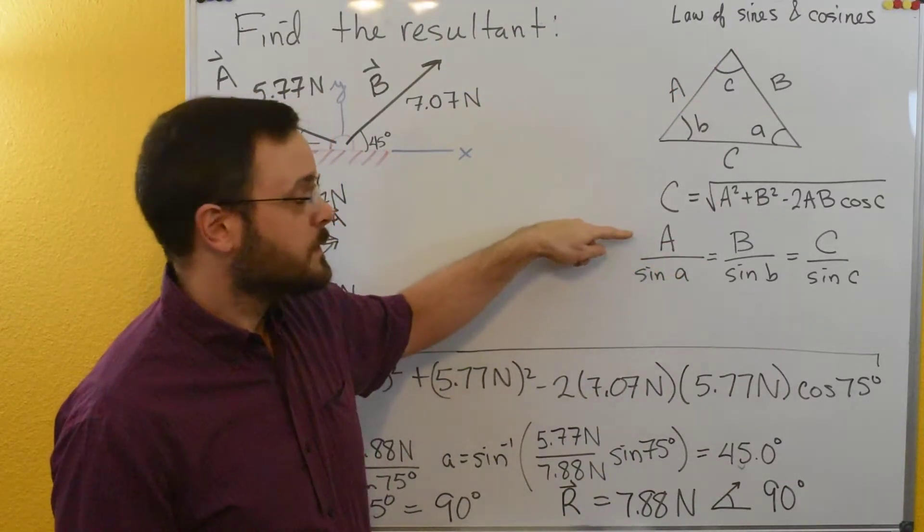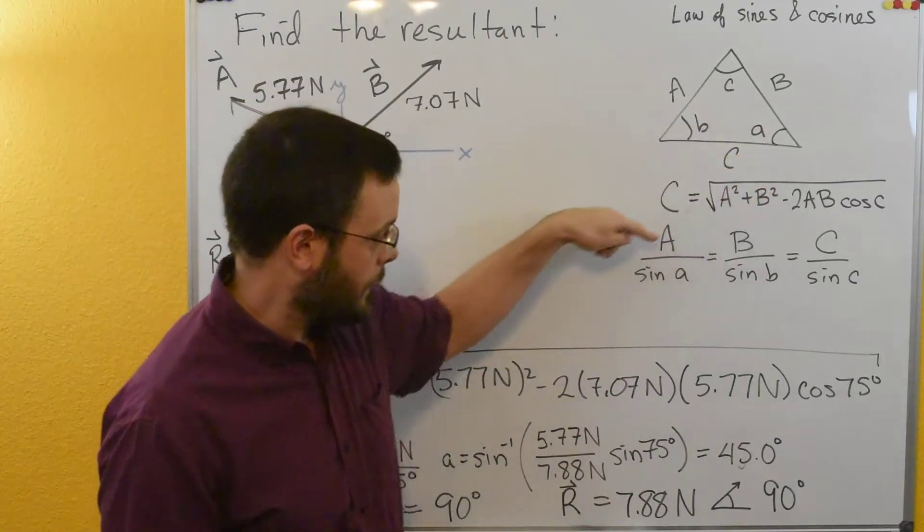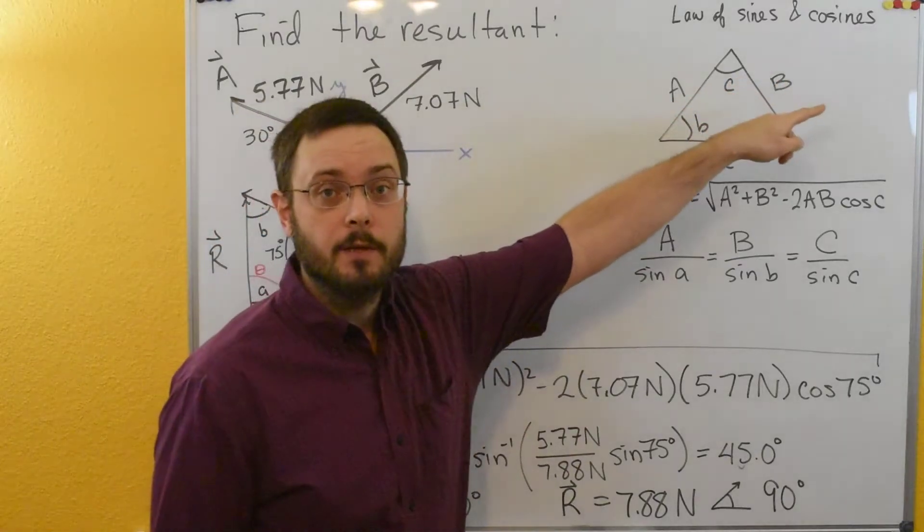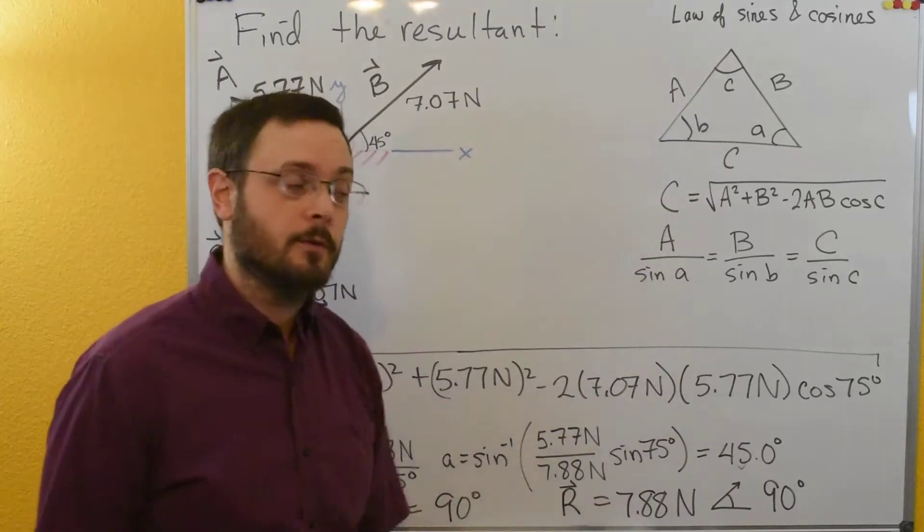And then law of sines is that side a divided by the sine of its angle is equal to side b divided by the sine of its angle which is equal to side c divided by the sine of its angle.